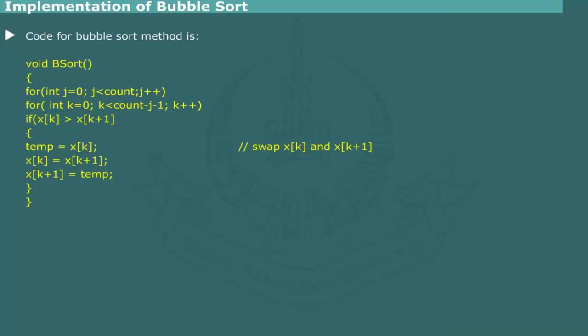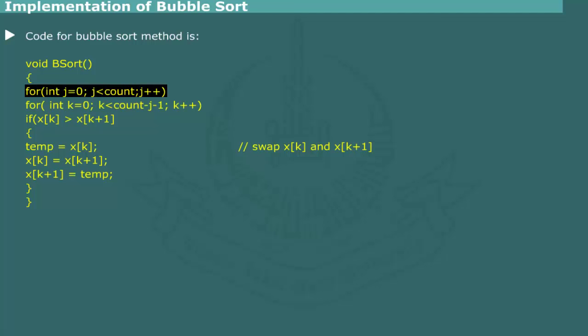Implementation of Bubble Sort: Bubble sort is easy to implement using two nested loops. The outer loop controls the passes, while the inner loop iterates through the array to compare adjacent elements. The variable count is the total number of elements in the array x. This code fragment can be embedded into the template class presented earlier to make a full-fledged program.